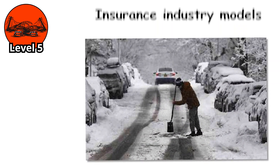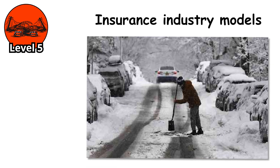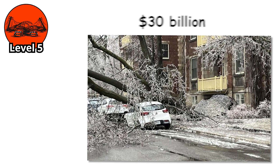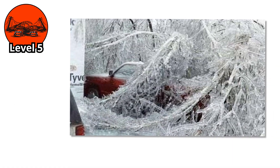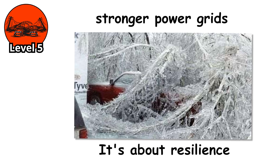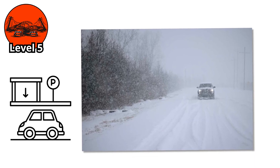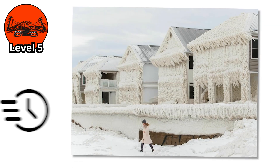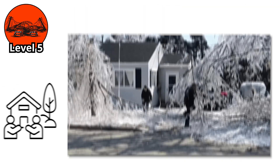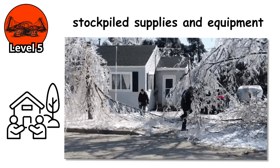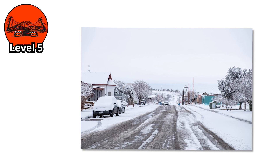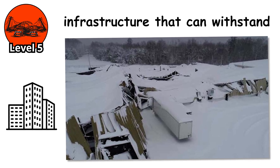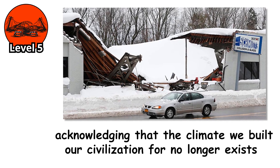The economic projections are sobering. Insurance industry models suggest that annual damages in North America could reach $15–$20 billion by mid-century, with individual catastrophic events potentially exceeding $30 billion in total economic impact. But it's not just about money — it's about resilience. We're learning to build stronger power grids, to bury more lines underground, to manage tree canopies near power infrastructure more aggressively. Community preparedness matters. After major ice storms, communities that recover fastest are those with strong emergency response plans, where neighbors help neighbors, where local governments have stockpiled supplies and equipment. The future of ice storms is about how we adapt to changing conditions — building infrastructure that can withstand extremes we once thought were outliers, and acknowledging that the climate we built our civilization for no longer exists.